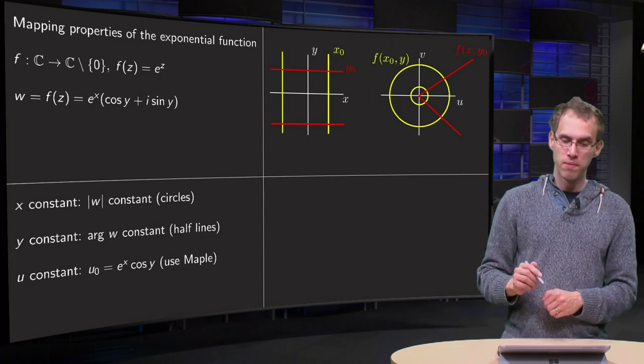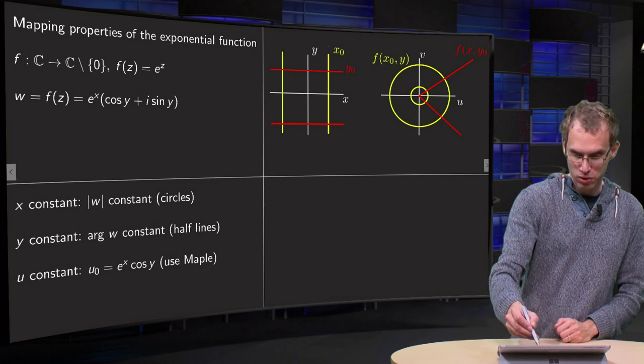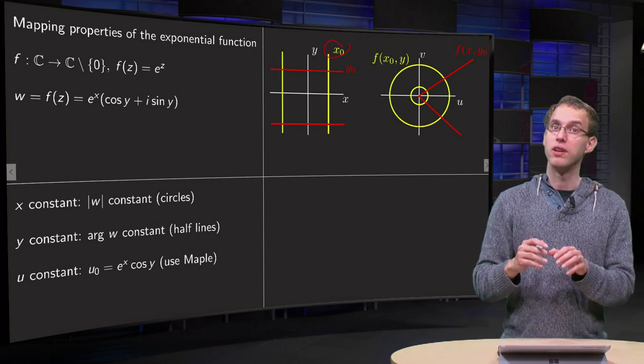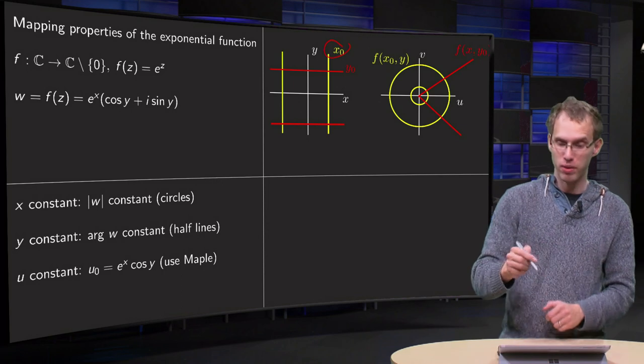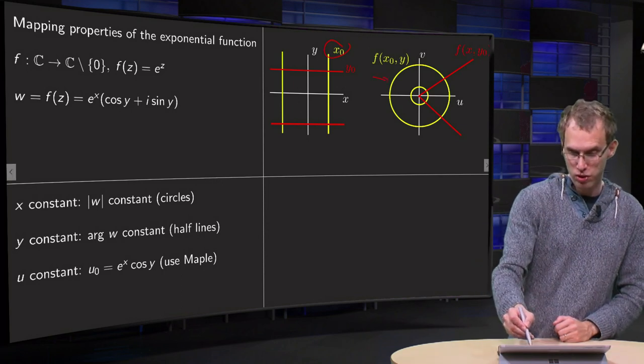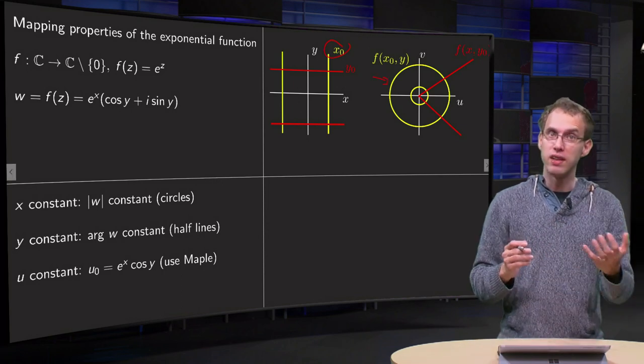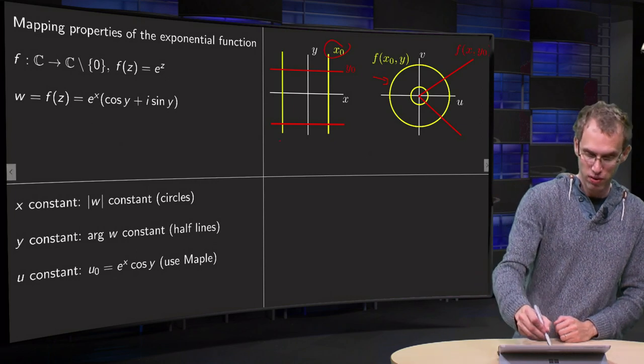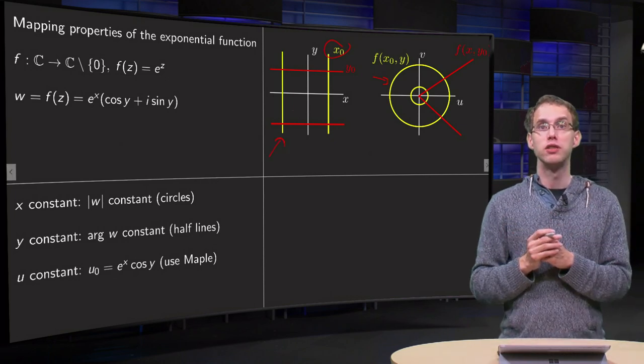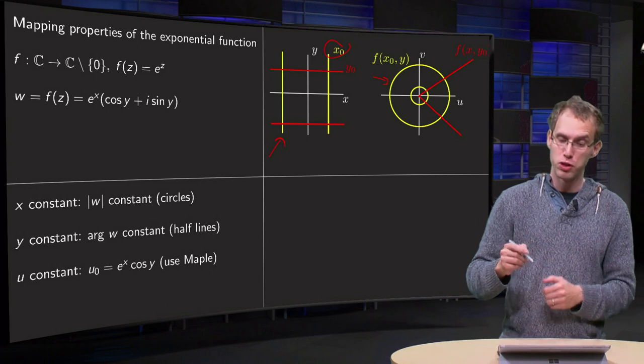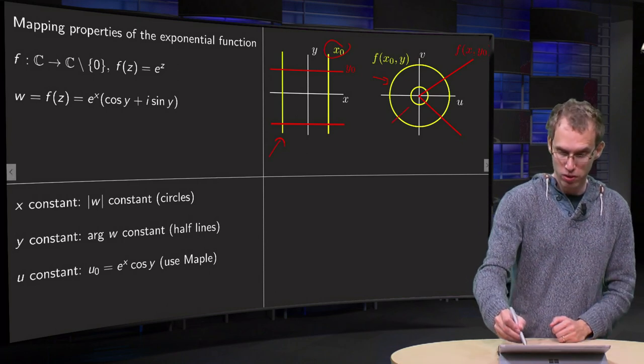So what do we get? First we set x to some positive constant x0, then we get circles with radius e^x0, so that's the outer circle here. And if we take a negative x1, you get the circle with radius e^x1, which will now be smaller, so we get the yellow circle over there.